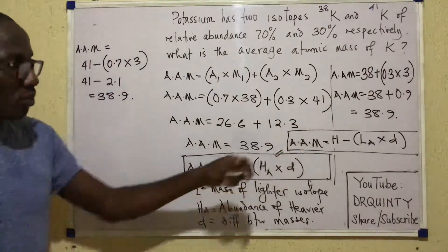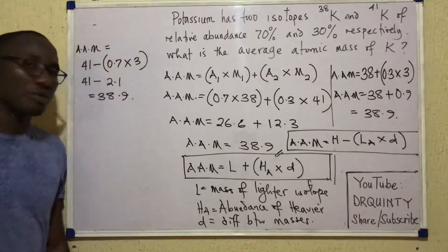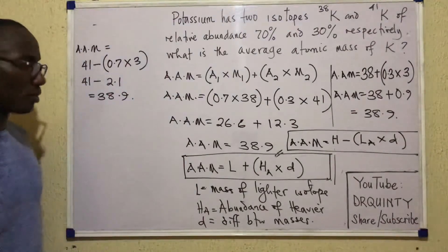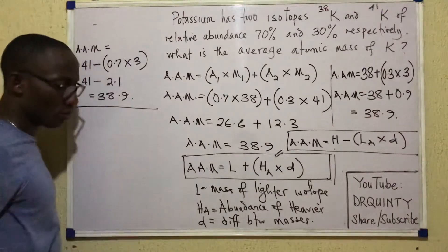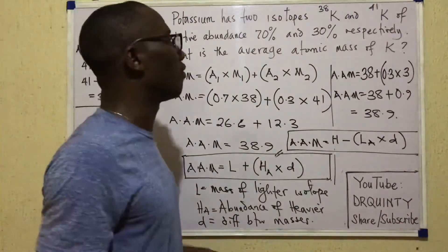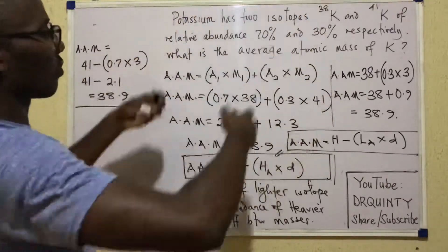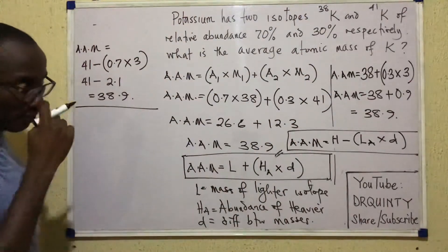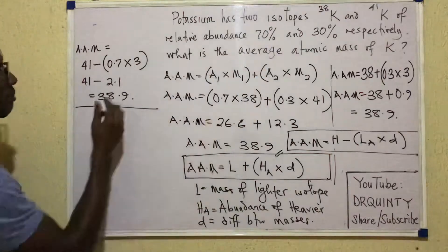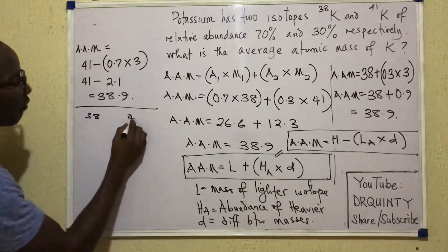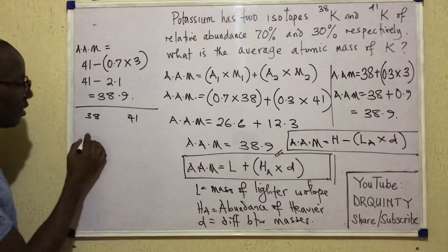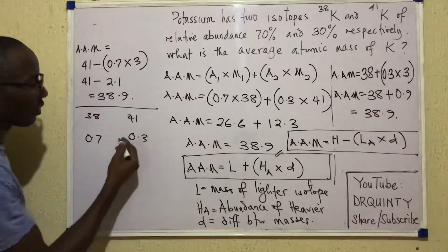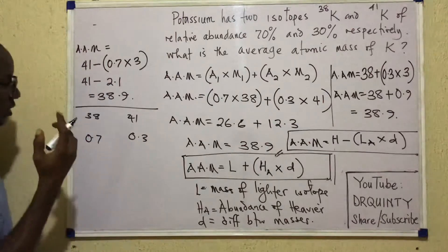So any of the formulas in the box can be used. And please take note. If I were to do this in an exam, like under exam conditions, I would not even need the formula. I can only look at the question and take my answer like this. I'll just look at the two isotopes. As I'm seeing them there, I'm seeing 38 and 41. And then look at the abundances under them. And what am I seeing? 0.7 and 0.3.